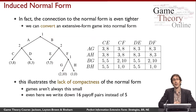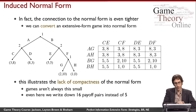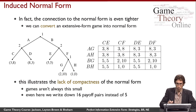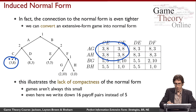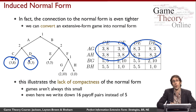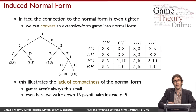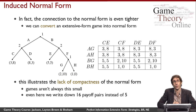This is called the induced normal form of the extensive form game. One thing to notice is that it has more entries than there are leaf nodes in the extensive form — there are repetitions. For example, the payoff 3, 8 appears four times even though it corresponds to only one leaf node, and 8, 3 is repeated four times as well. That's because there are four pure strategy profiles that lead to the same leaf node in the tree.